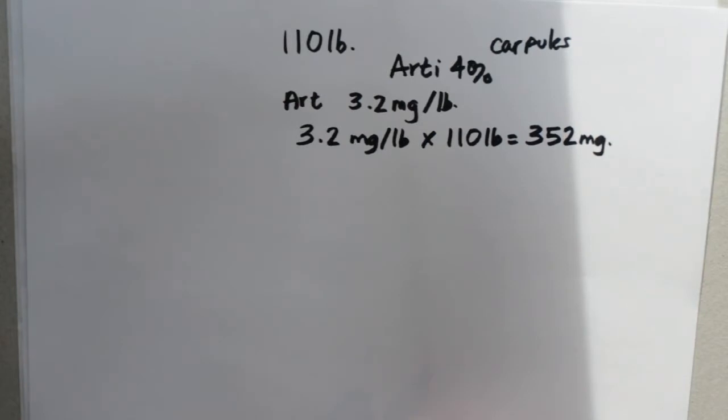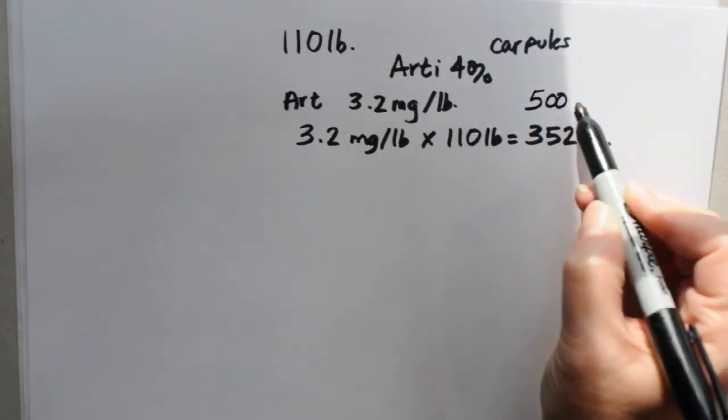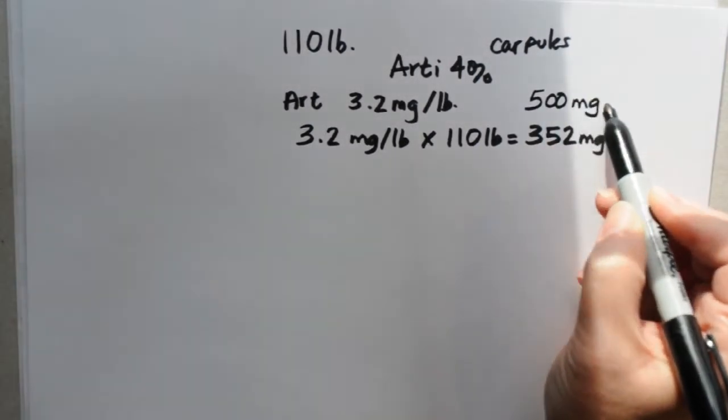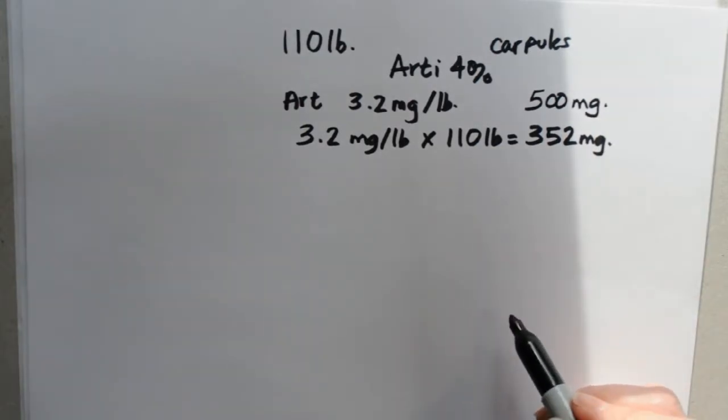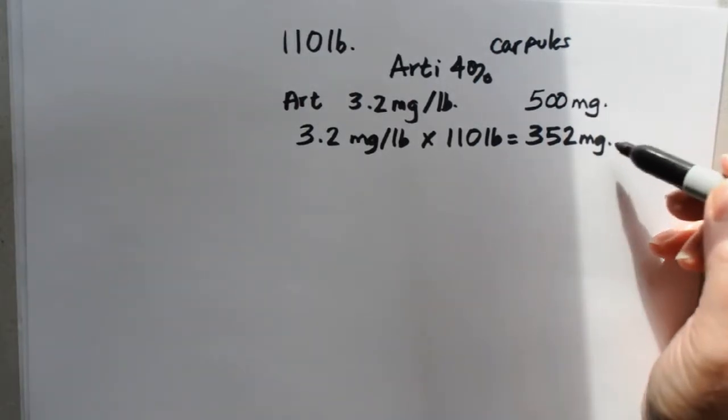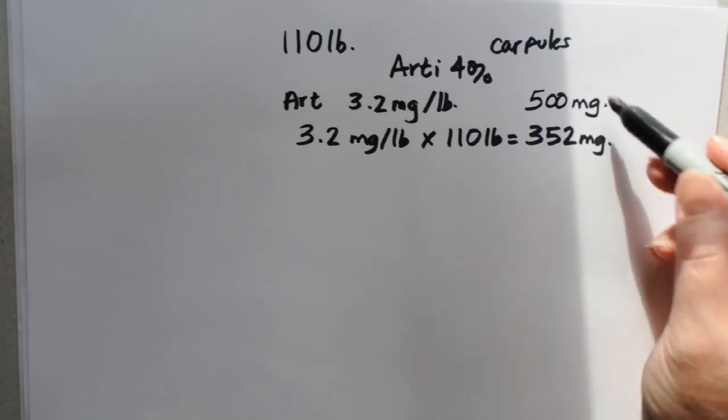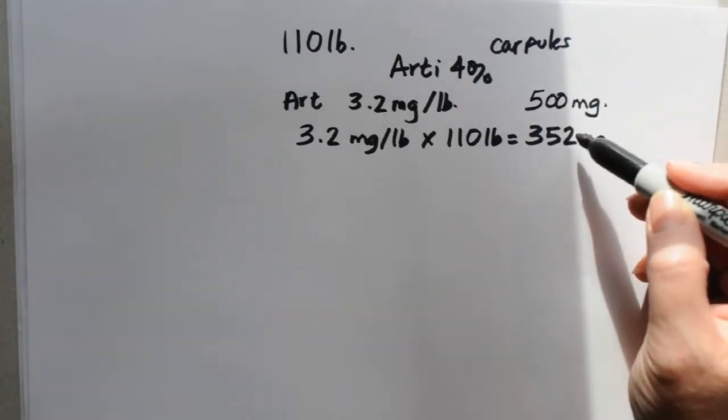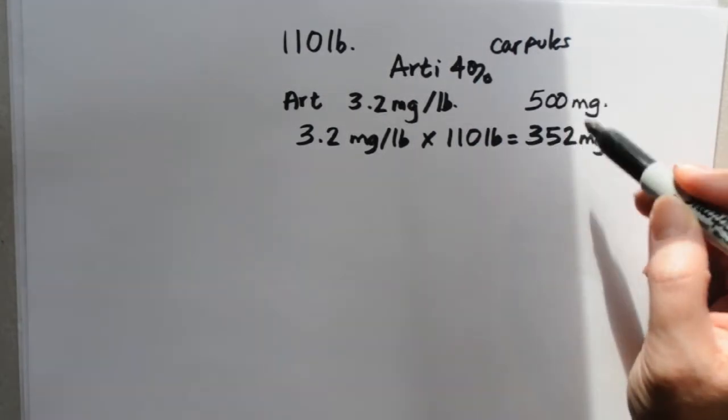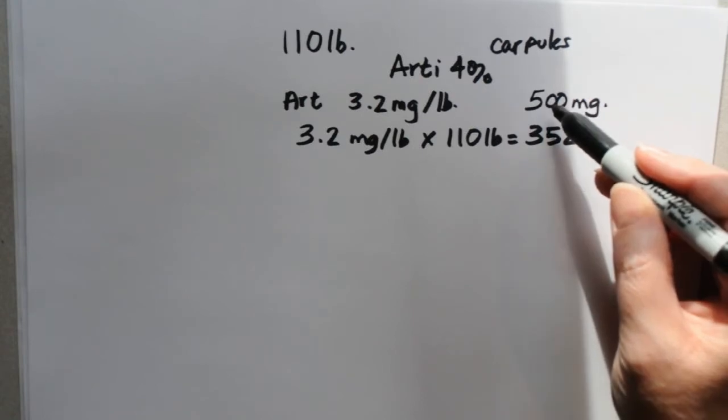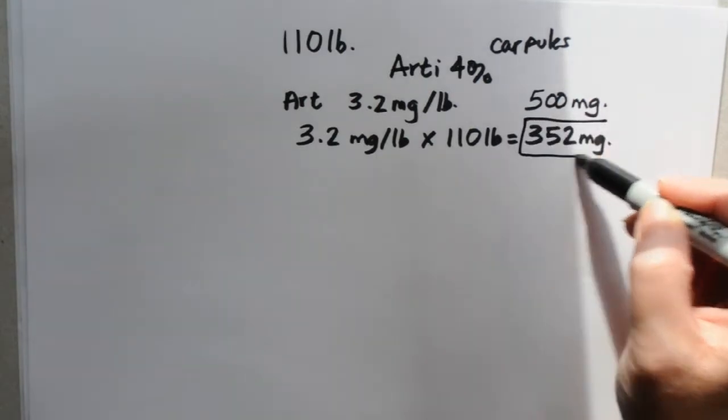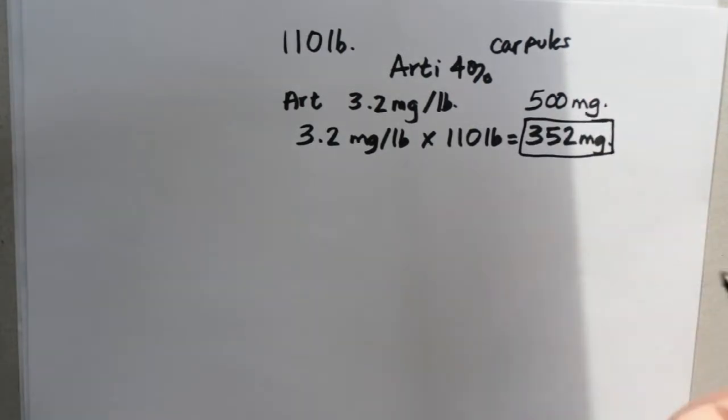3.2 milligrams per pound times 110 pounds means she can have 352 milligrams. Now, the other thing we need to look at is the absolute upper dose of articaine, which happens to be 500 milligrams, and that's something you'll just have to memorize. When we answer our question, which is the maximum dose, we need to pick the lower of either our calculated number or the absolute upper limit. And in this case, it is our calculated number, which is 352 milligrams.